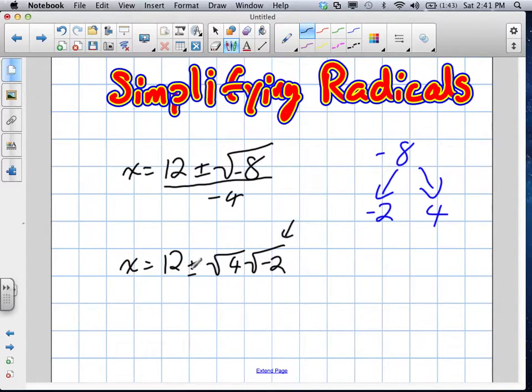So we now get x is equal to 12 plus or minus root 4 times root negative 2. I can't do anything with the root negative 2. Sorry, I'll divide it by 4, or negative 4. But it can simplify the 4, or the root 4. What is the root 4 going to become? Negative 2. Yeah, plus or minus 2 times root negative 2 divided by negative 4.